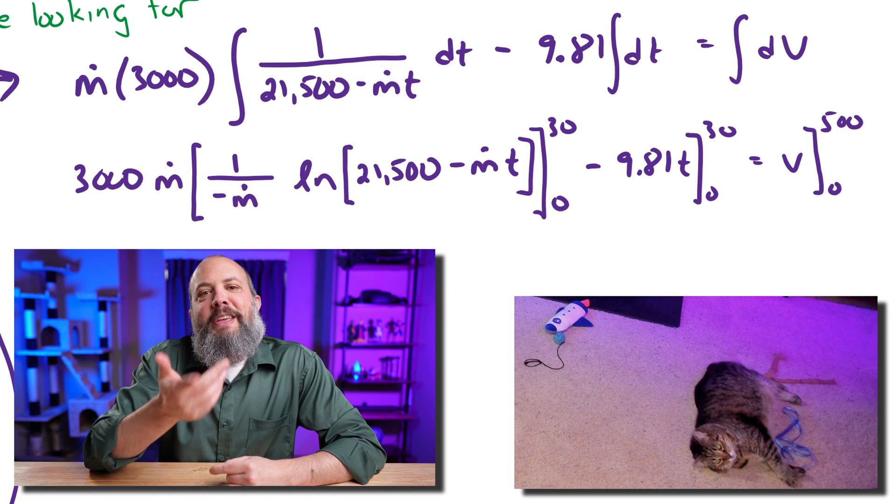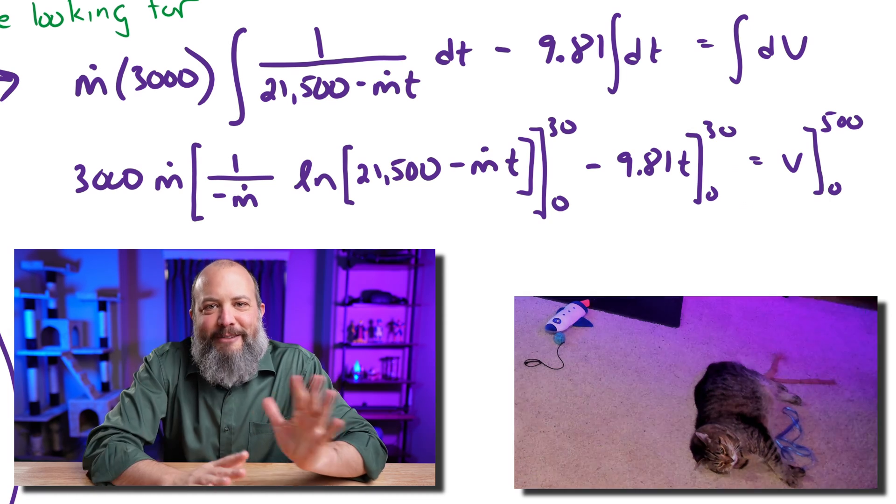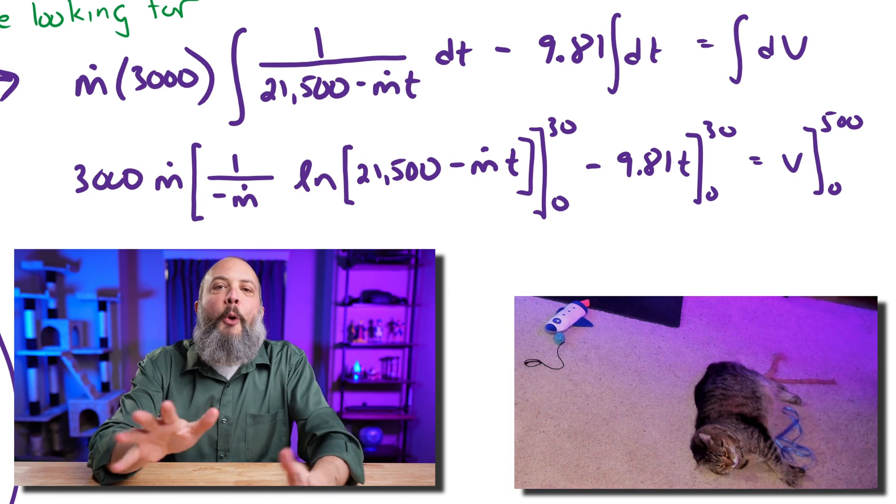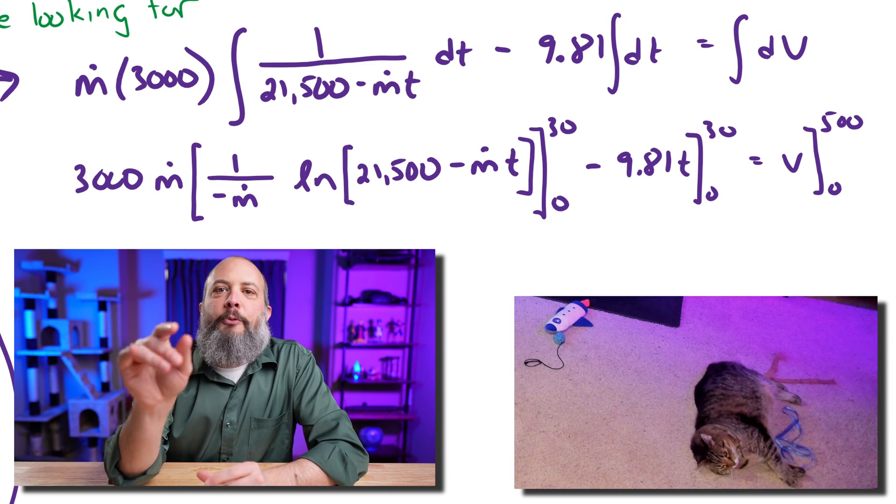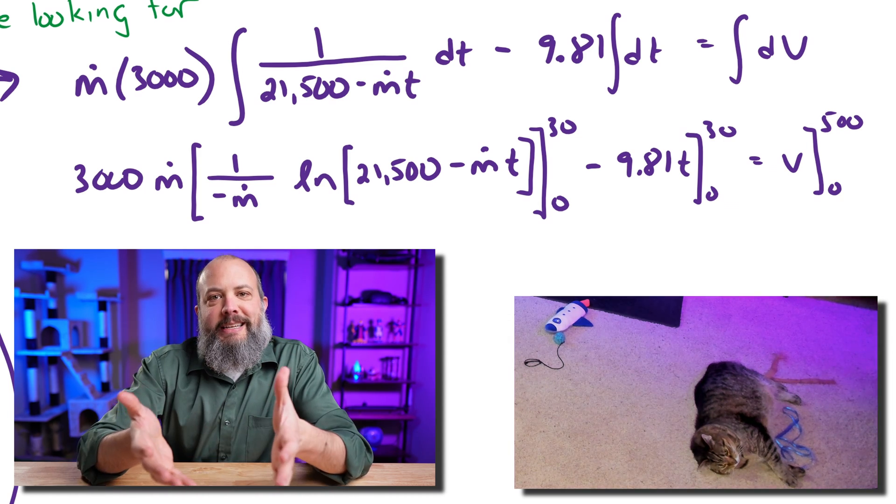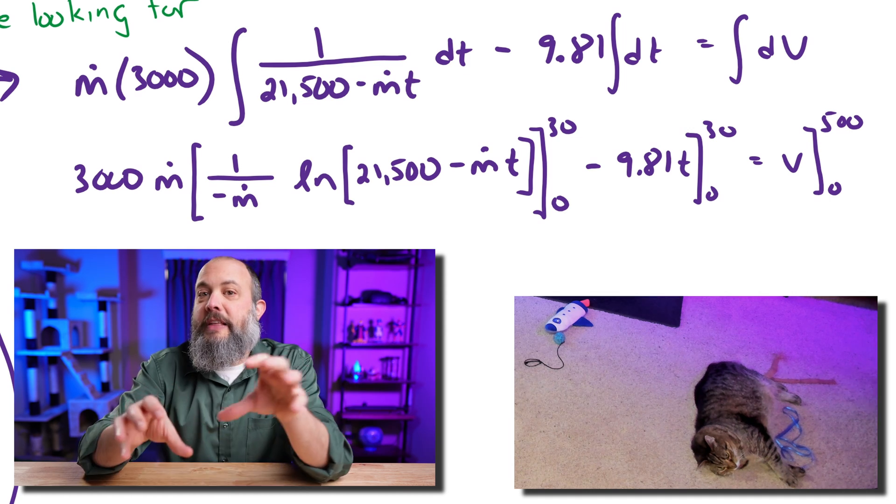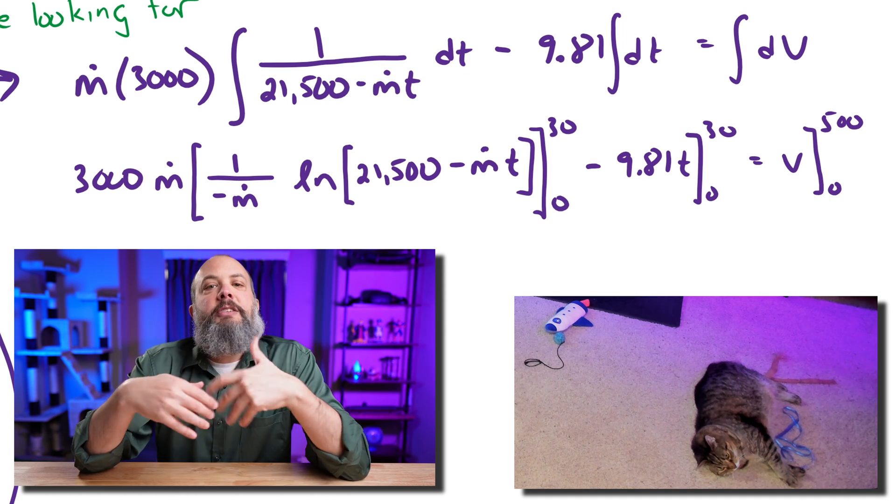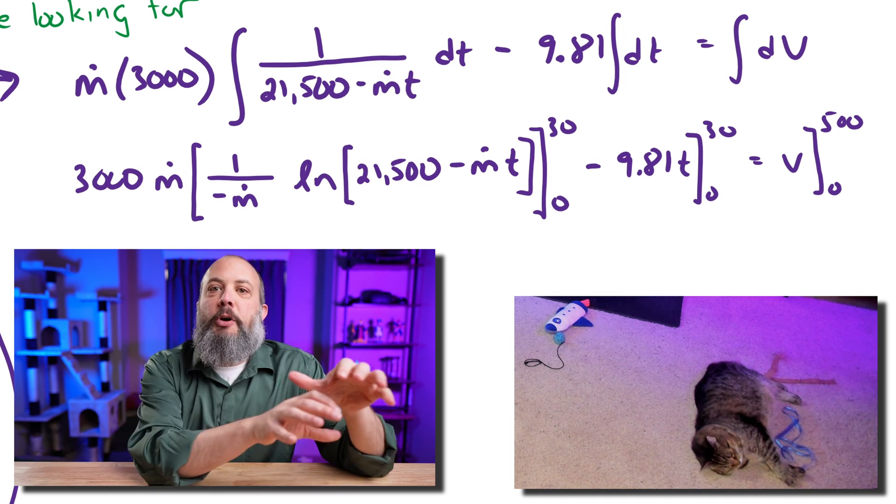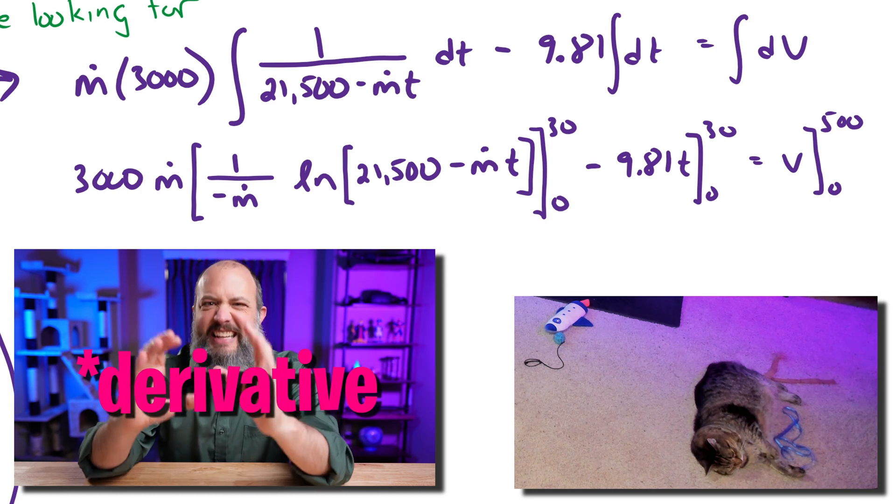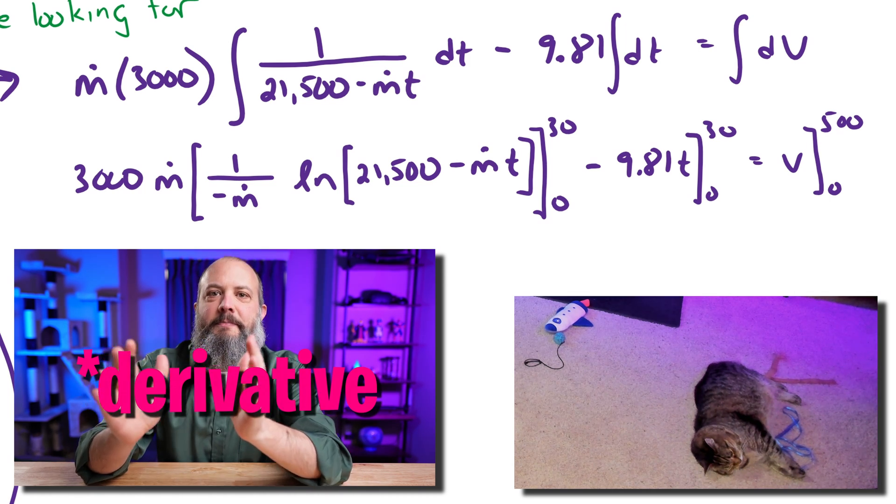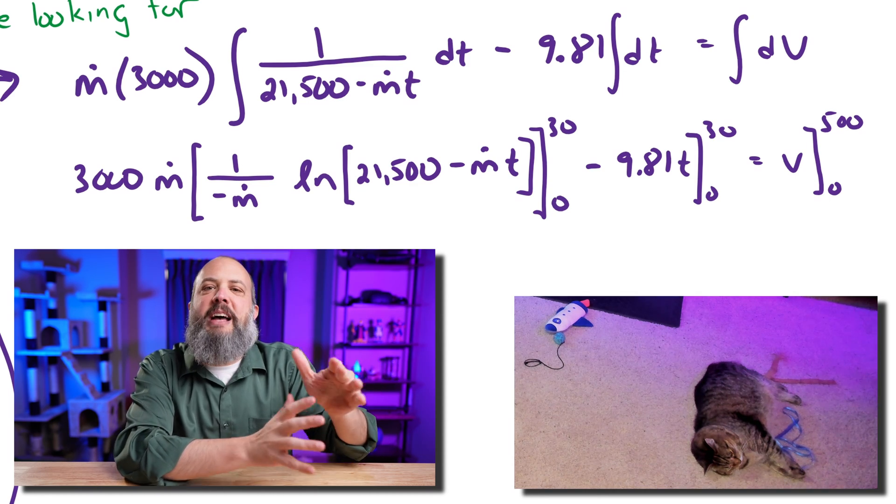And so now the integral of the 1 over 21,500 minus m dot t. So the integral of 1 over t would be natural log of t. The integral of 1 over a function of t is going to be natural log of that function, but because of the chain rule will also be multiplied by 1 divided by the integral of the inside part of that parentheses. So that's why I have a 1 over negative m dot in front.